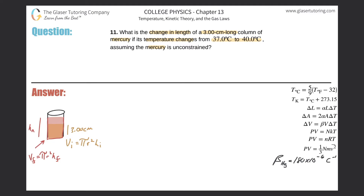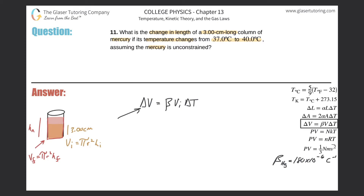Now let's turn our attention to the change in volume formula. The change in volume mercury will experience equals its volume coefficient of thermal expansion beta, multiplied by the initial volume, multiplied by the change in temperature. The temperature change can be in Celsius or Kelvin — it doesn't matter because the delta value is equivalent for both. I know my thermal coefficient of volume expansion, but they're giving me a height and I don't have height in this equation, so I need to substitute height in.